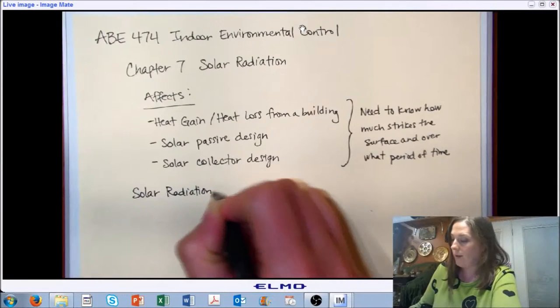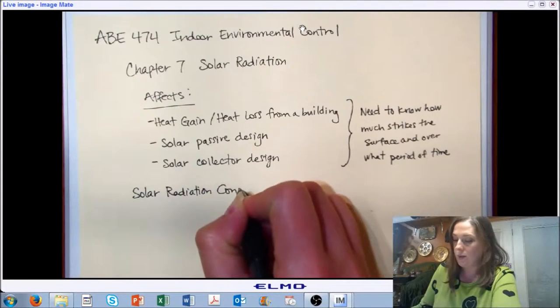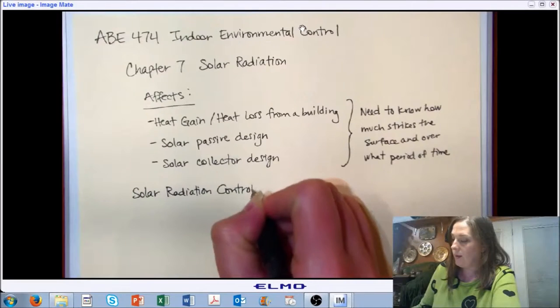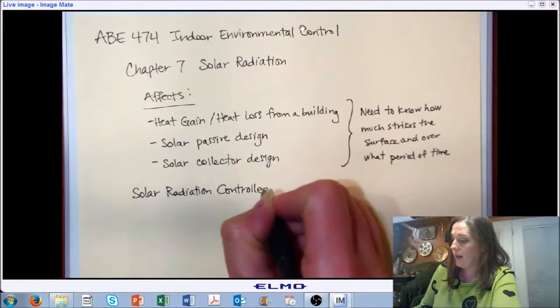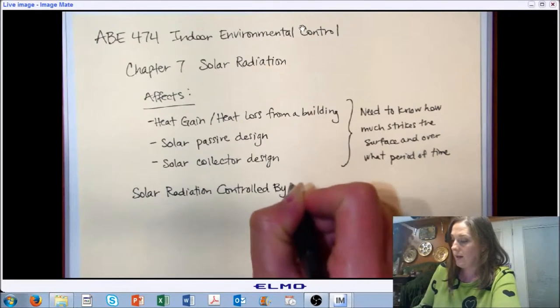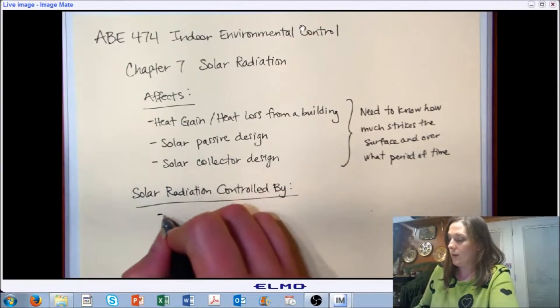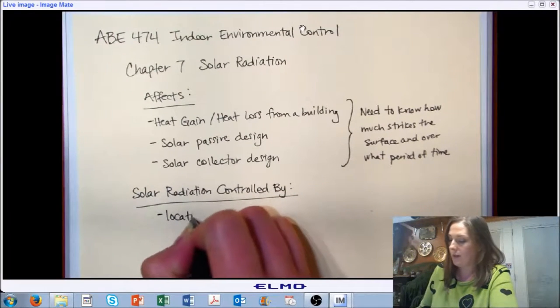Most of them are related to the interactions between the sun and the surface that we're interested in. We can break those down into the location of the sun in the sky.